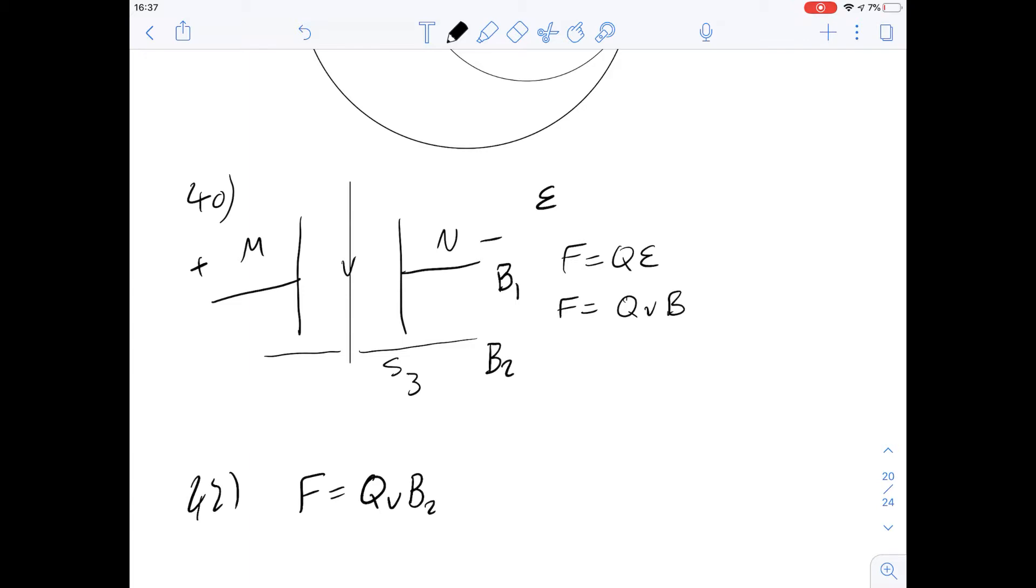So really the question here is asking what forces are happening at this point here? Because at this point the ion hasn't passed through S3, the speed of the ion going through slit S3 is going to be due to B1 and E here. So that's why we can leave B2 out of the equation.